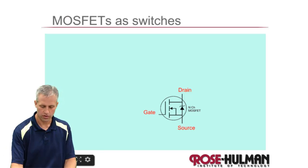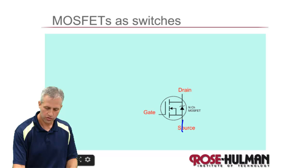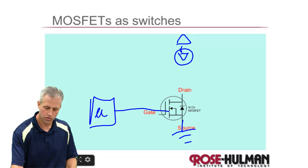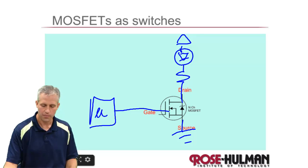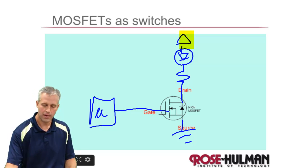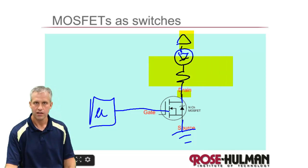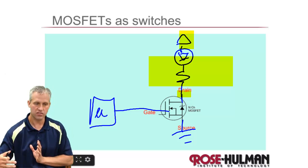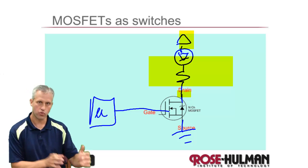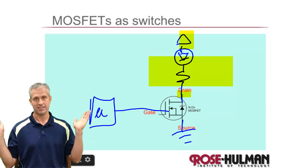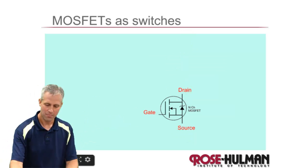To draw a real-world example: the source is always grounded — they have different names than what the NPN had. The microcontroller will just have a direct connection, which is the part that I love. Let's say we were controlling an LED. Power goes to whatever the load is, and then the load connects to the drain. You can see how the gate is very similar to the base, the emitter and source are very similar, and the drain and collector are very similar. Different words, but very same concepts.